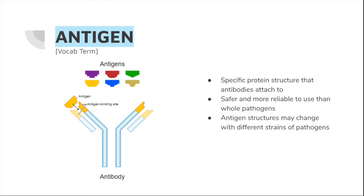Antigens are the specific protein structure that antibodies attach to. Because it does not contain the whole pathogen, vaccines made with antigens often come with lesser side effects and are more reliable to use. However, with multiple strains of pathogens, it is harder to make a vaccine that covers all strains because the antigen structure may vary.